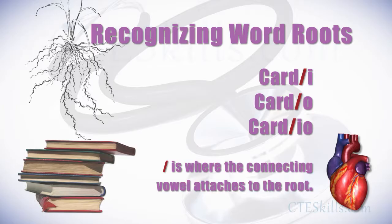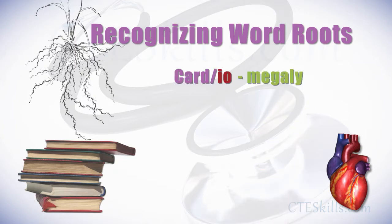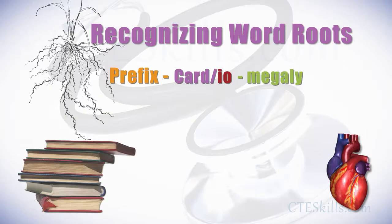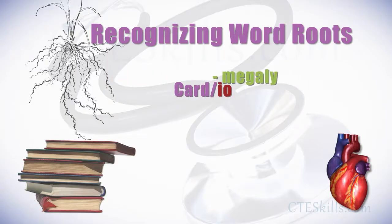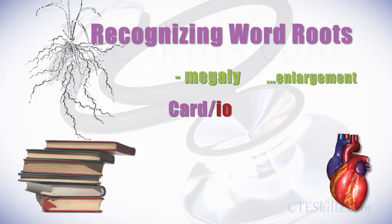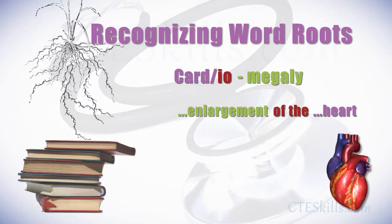The slash is where the connecting vowel attaches to the root. An example is cardiomegaly. The method for deciphering a medical term is that you start with the last word part and work yourself up through each element until you get to the first element, which would most likely be a prefix. So you would decipher first the suffix — in this case, megaly, which means enlargement. The next element is the word root: cardio, which means heart. The complete meaning of cardiomegaly is enlargement of the heart.